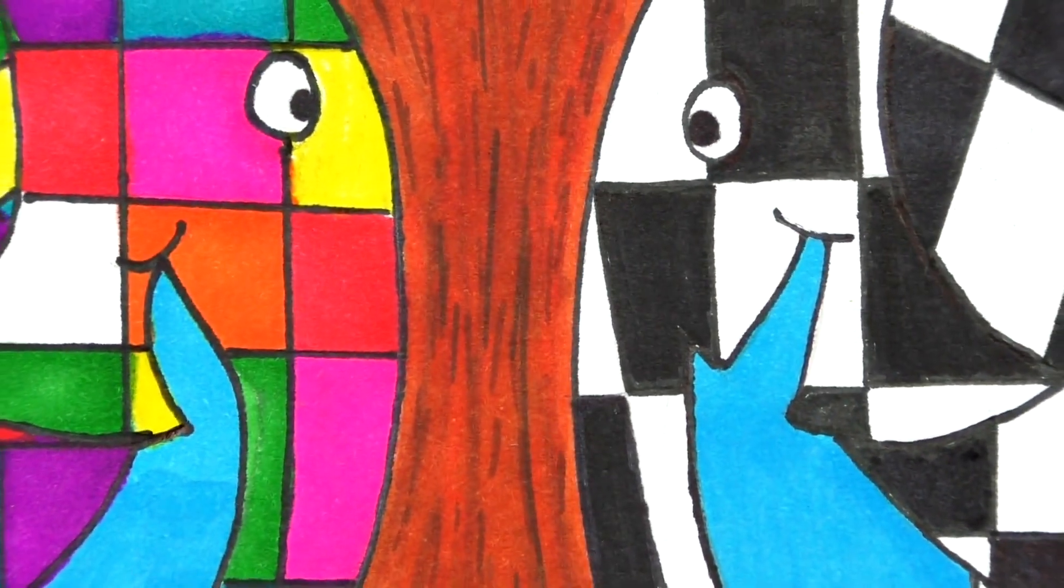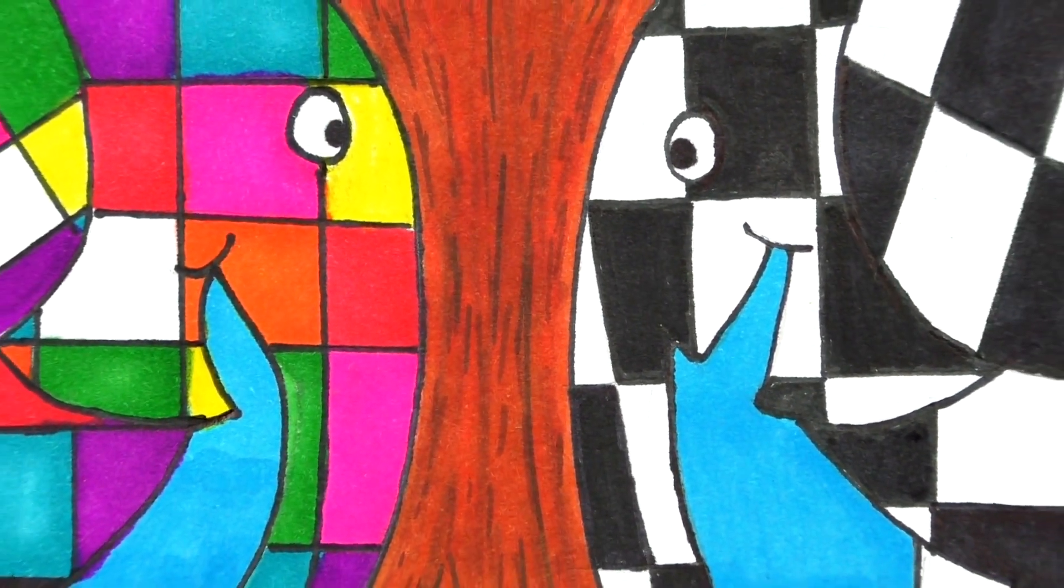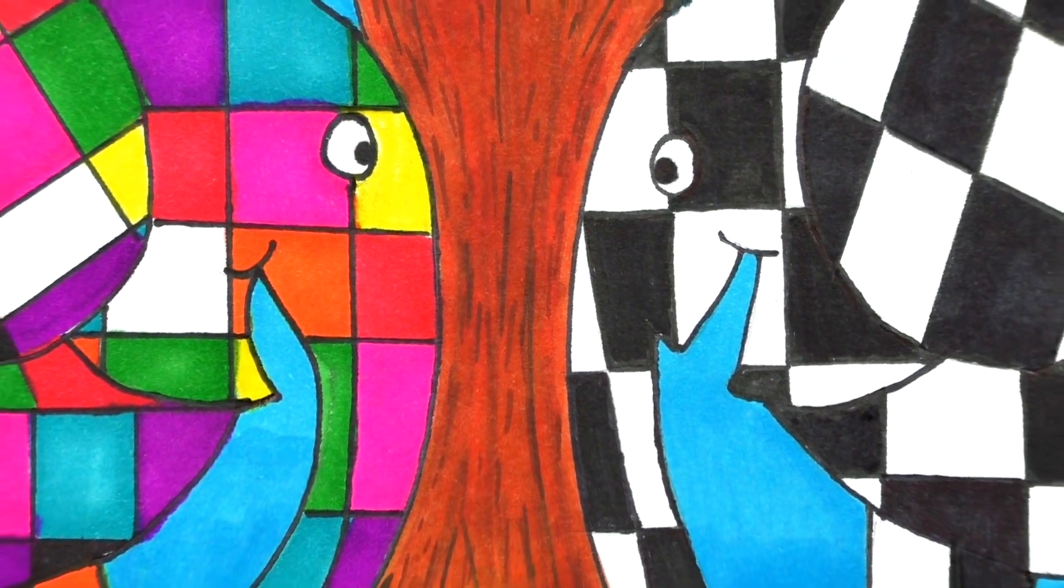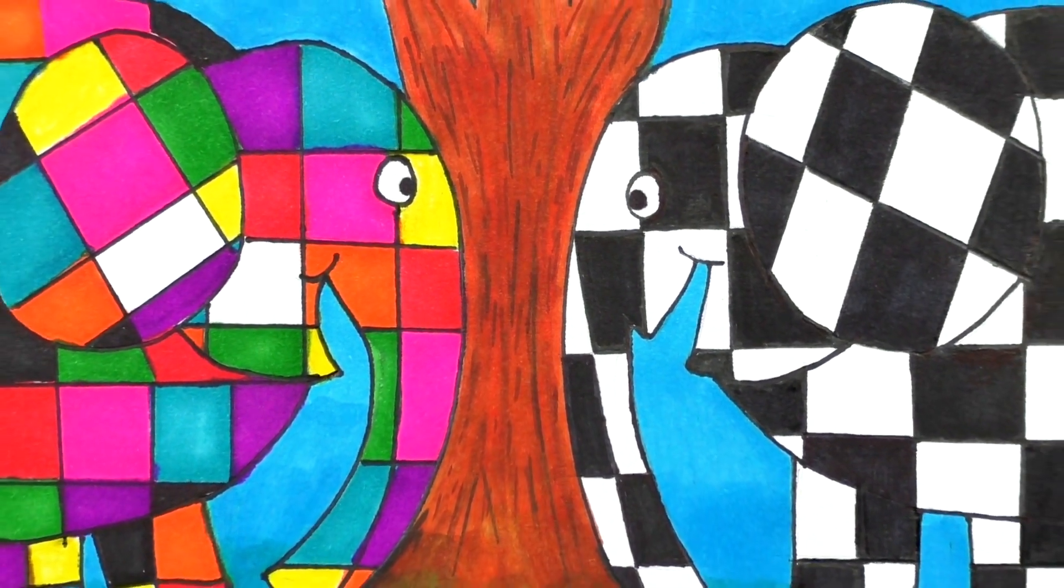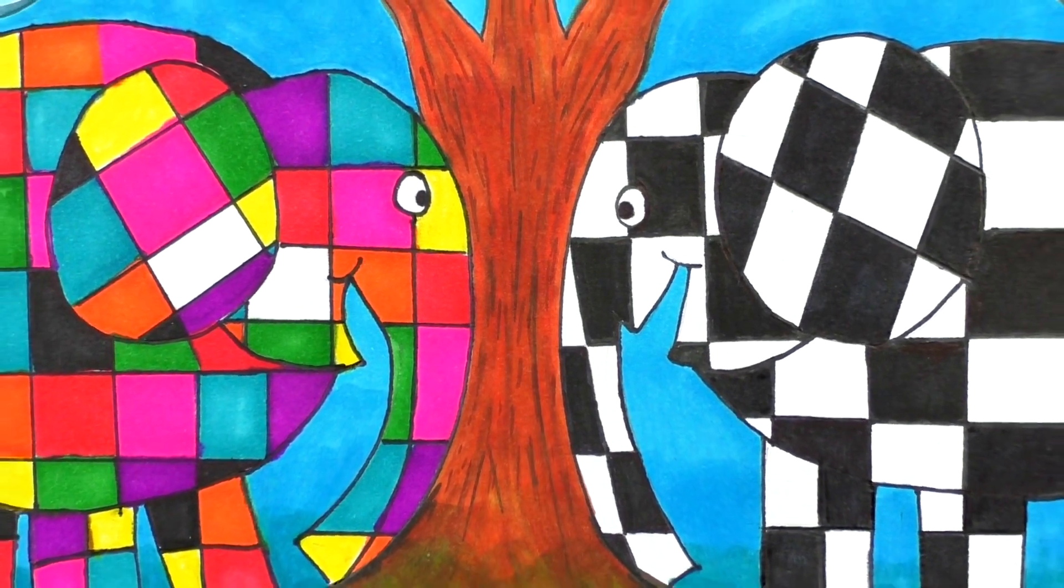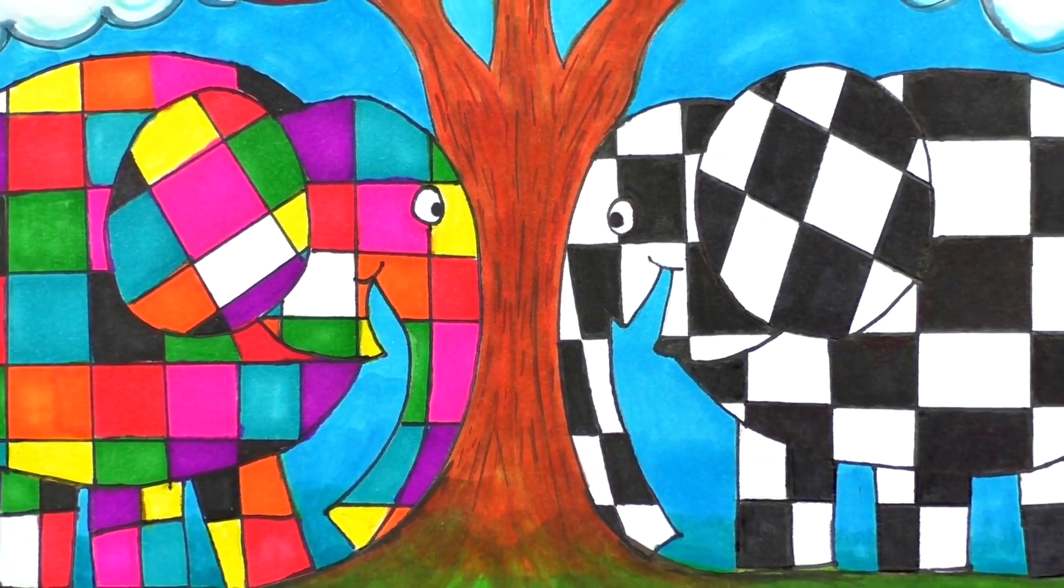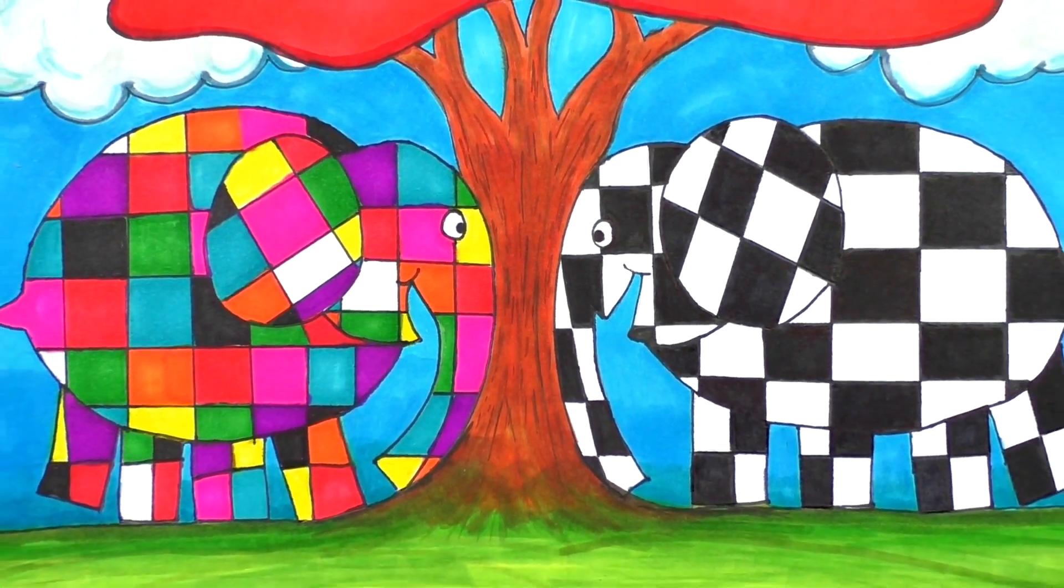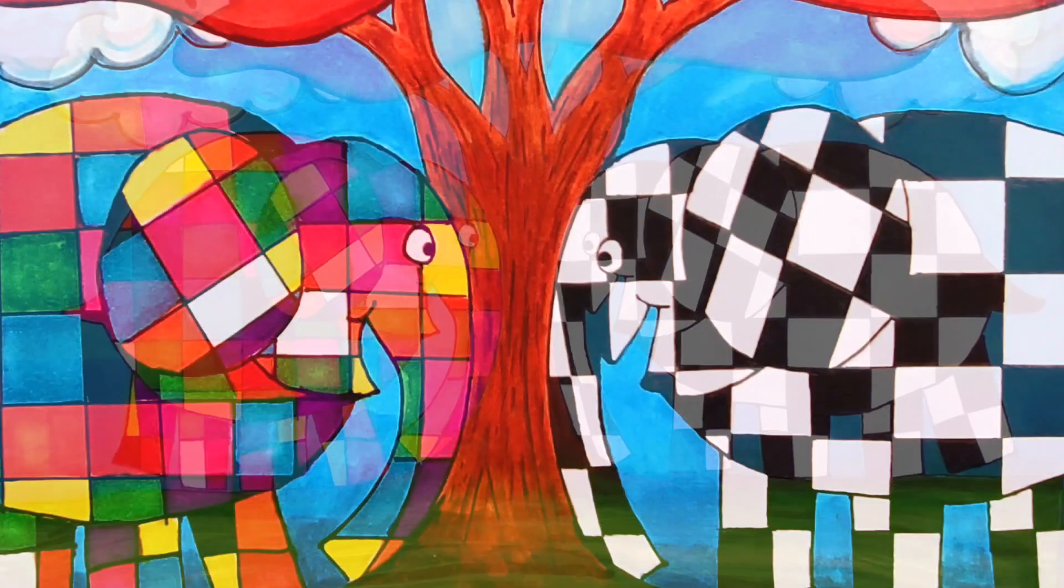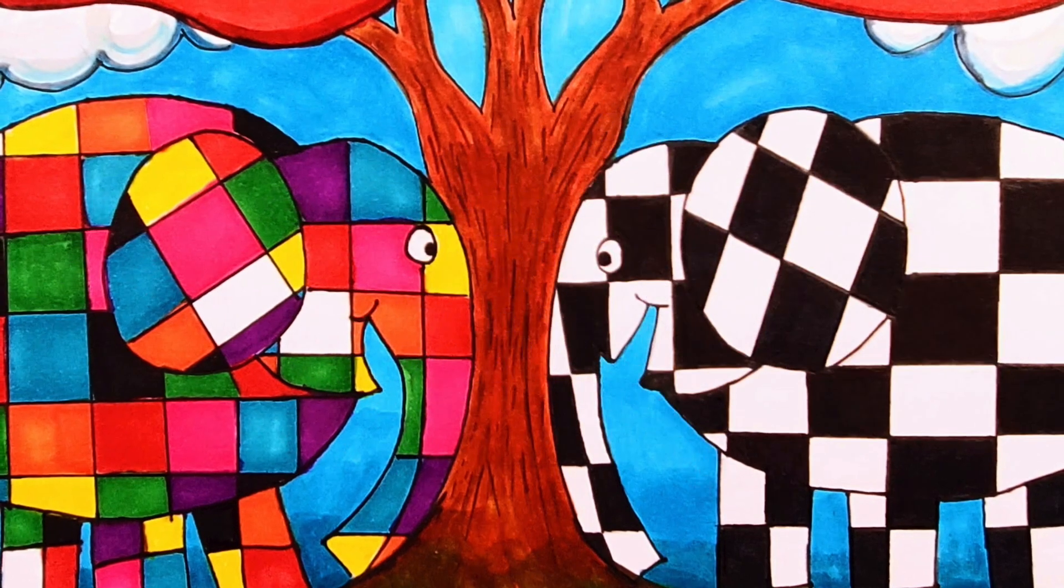If you can get to the library, check out Elmer and many of the other books from the collection. The author's name is David McKee. It's a beautiful collection of books that I know every child would love to read. And especially, check out Elmer and Wilbur.